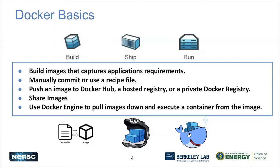You use the Docker tool to build images that capture all of the application's requirements. You put those in a recipe or commit them manually, build this image, and then push it to Docker Hub — which is sort of like GitHub for images — or you can push them to a private registry. Then you can go to an execution host and use something like Docker to pull that image down and execute it.